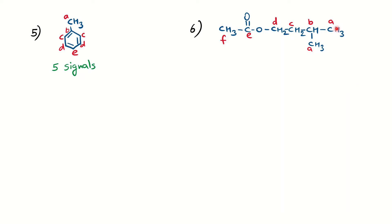In this molecule, two methyl groups are chemically equivalent because both are in the same environment, so they give the same signal A. Then comes carbon B, followed by signals C and D — all carbons are chemically distinguished. Finally you have an ester carbonyl which gives a separate signal E. The methyl group attached to the carbonyl is chemically distinguished from the methyls attached to the CH group, so it also gives a separate signal F. Total, there are six signals in C-13 NMR for this molecule.